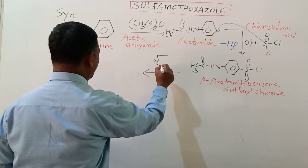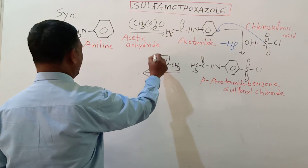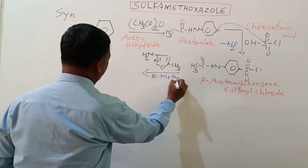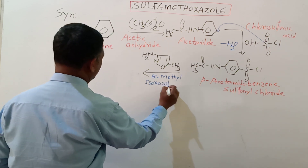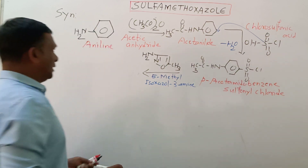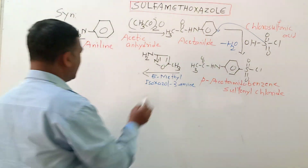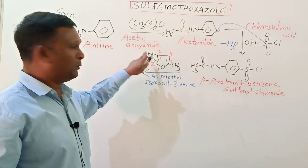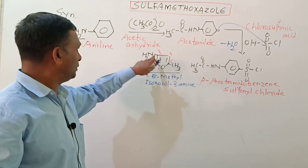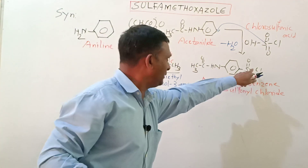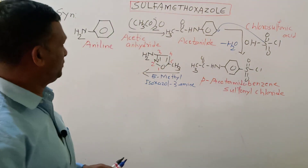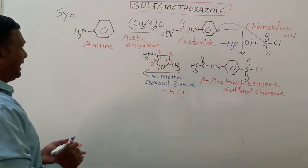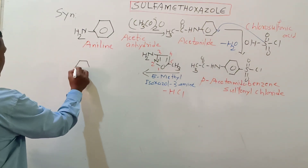This sulfonyl chloride derivative is then reacted with the isoxazole derivative 5-methylisoxazole-3-amine. This is a 5-membered heterocyclic ring numbered 1 through 5: at position 5 there is a methyl group and at position 3 there is an amino group. The amino group attacks the sulfonyl group in a substitution reaction, whereby hydrogen and chlorine are liberated as HCl, forming the intermediate derivative.